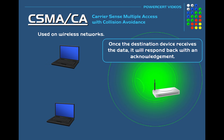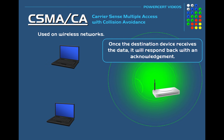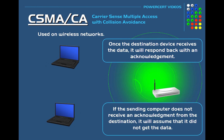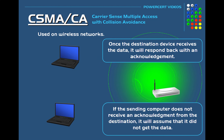Once the destination device receives the data, it will respond to the sending computer with an acknowledgement, informing the sender that it has received the data. But if the sending computer does not receive an acknowledgement from the destination, it will assume that the data did not get through and will start the process all over again.